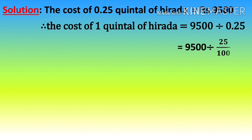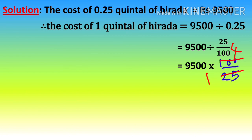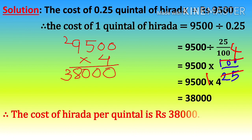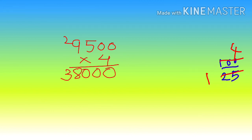We convert the decimal number into fraction: 0.25 becomes 25 upon 100. So 9,500 multiplied by 100 upon 25, which simplifies to 9,500 multiplied by 4. The answer is 38,000. Therefore, the cost of Harida per quintal is Rs. 38,000. Do the rough work with a pencil: 9,500×4=38,000. I hope you have understood.